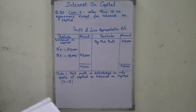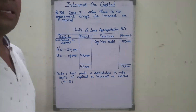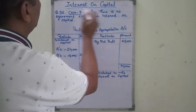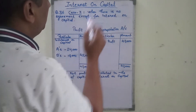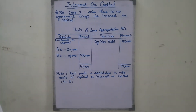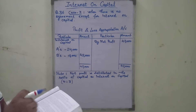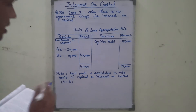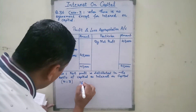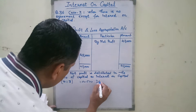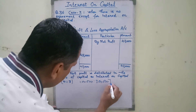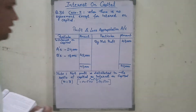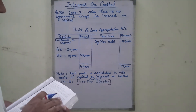This is question number 36 of DK Goyle, in which we have to calculate interest on capital. How is interest charged on capital? In question number 36, A and B are partners who contributed capital of 4 lakh and 3 lakh respectively.